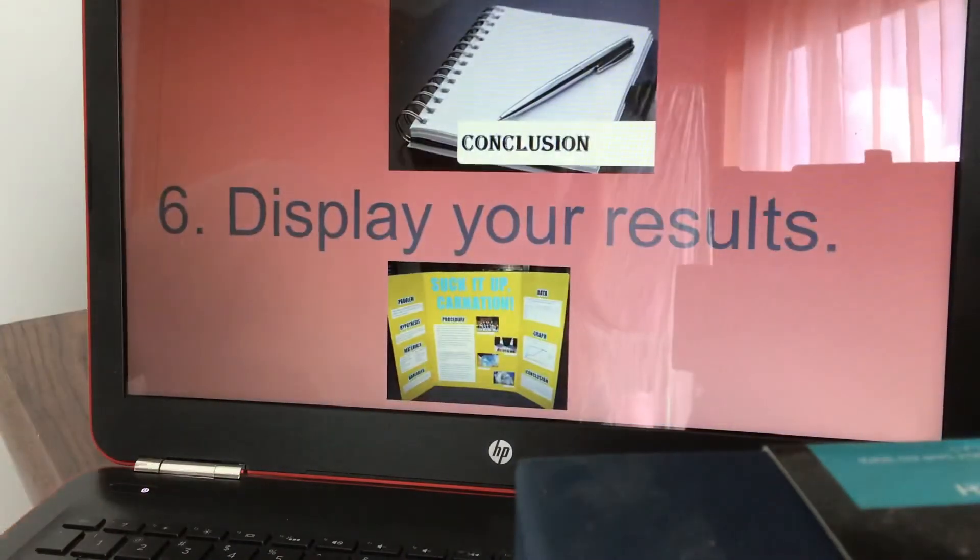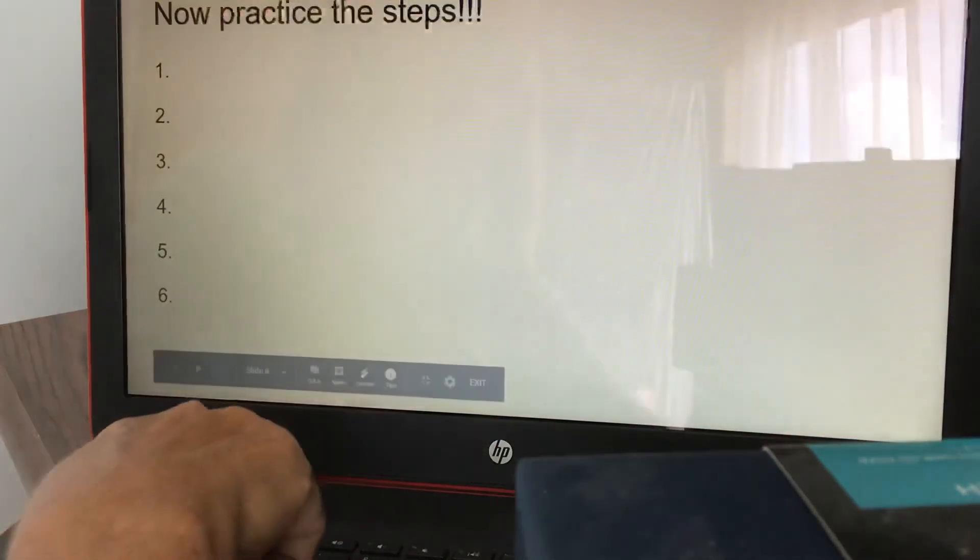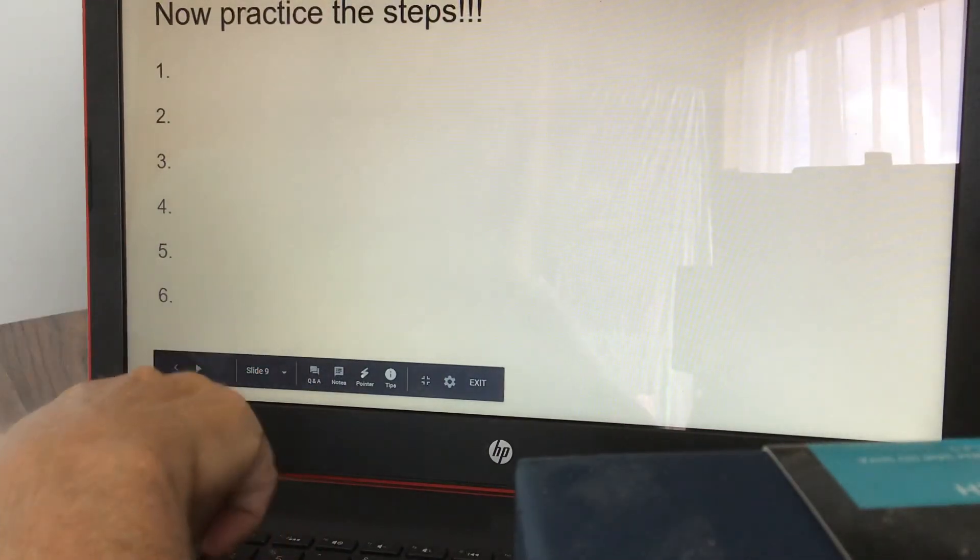And then your conclusion or display your results, your conclusion for the project or your question, your experiment, what happened? And you would say my hypothesis was correct. I thought Diet Coke would react the fastest and it did. It reacted in this amount of time versus Coca-Cola. Or you could say the opposite. You could say, I thought Coke would react the fastest. My hypothesis was incorrect. And that's how you would do your experiment and why we go through the steps of the scientific method.